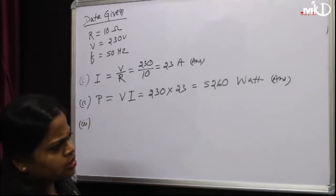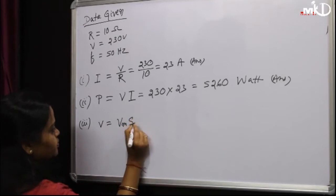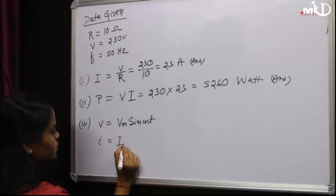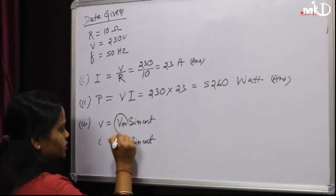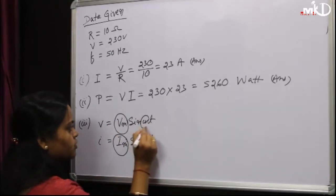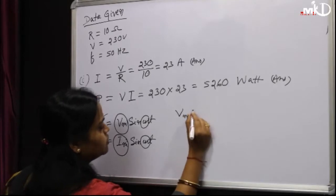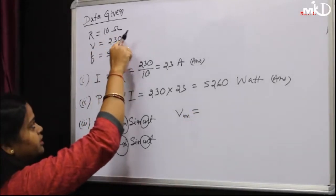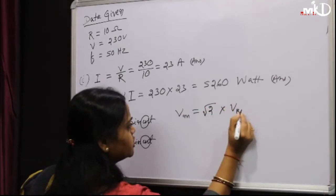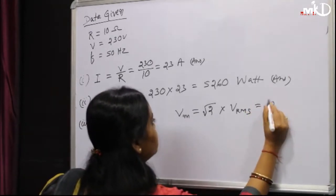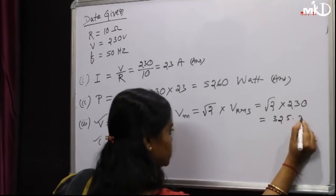For the third part, we need the equations of voltage and current: V = Vm sin(ωt) and I = Im sin(ωt). To write these, we need Vm, Im, and ω. The voltage given is Vrms, so Vm = √2 × Vrms = √2 × 230 = 325.27 V.